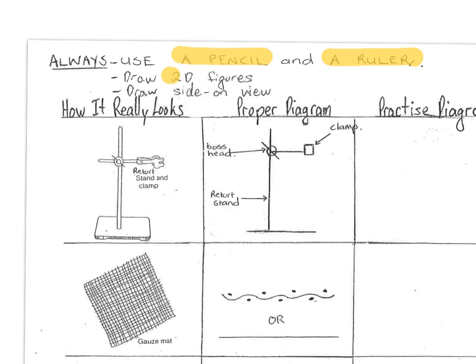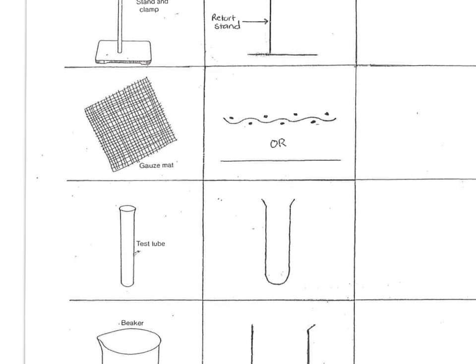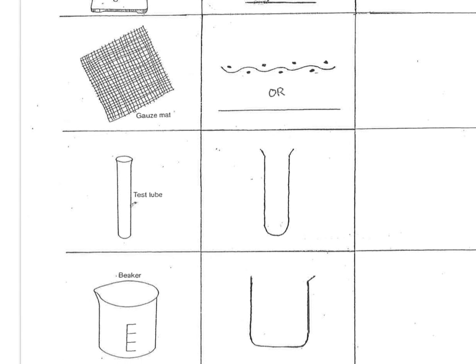The other one is you draw two-dimensional figures. Now what I mean by that, if you have a look at the first diagram, how it really looks, that's this diagram over here. For example, that's a diagram showing three dimensions. It shows the depth of the plate. The beaker down here and the test tube, they've got circles on the top to illustrate the fact that there's depth. This side is closer and that side is further away.